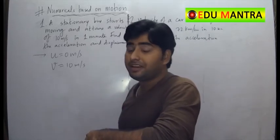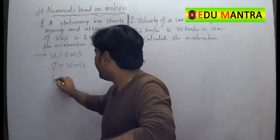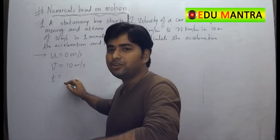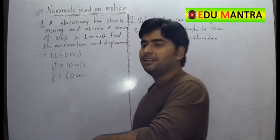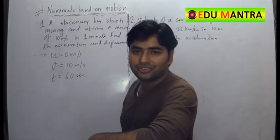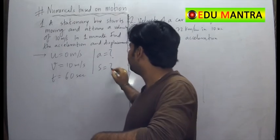So how much is the time in SI system? Time is measured in seconds. So the time will be 1 minute, that is into 60, that is 60 seconds. We need to find the acceleration and displacement.